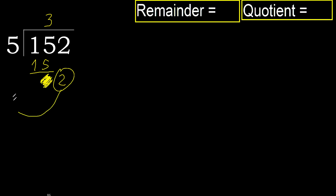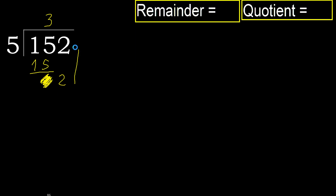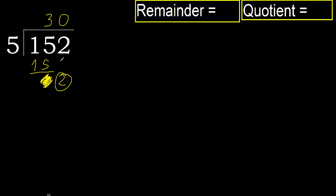2 is less than 5, therefore next — there is no more number. Therefore finish it, complete. Always complete with 0, because here it finishes with this number.